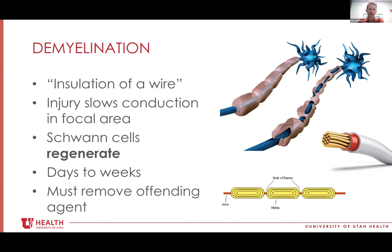Schwann cells do regenerate and they regenerate well — days to weeks. So if you have a significant injury and take away the offending agent, they will recover. The myelin-producing cells do a good job of regenerating, but you've got to get rid of the cause. If you have a compression that keeps compressing, you're not going to fix the problem. If it's a one-time compression injury — say you get hit by a ball — that offending agent is long gone and it will recover over time. That's demyelination neuropraxia: the injury occurs, Schwann cells regenerate, you're good.